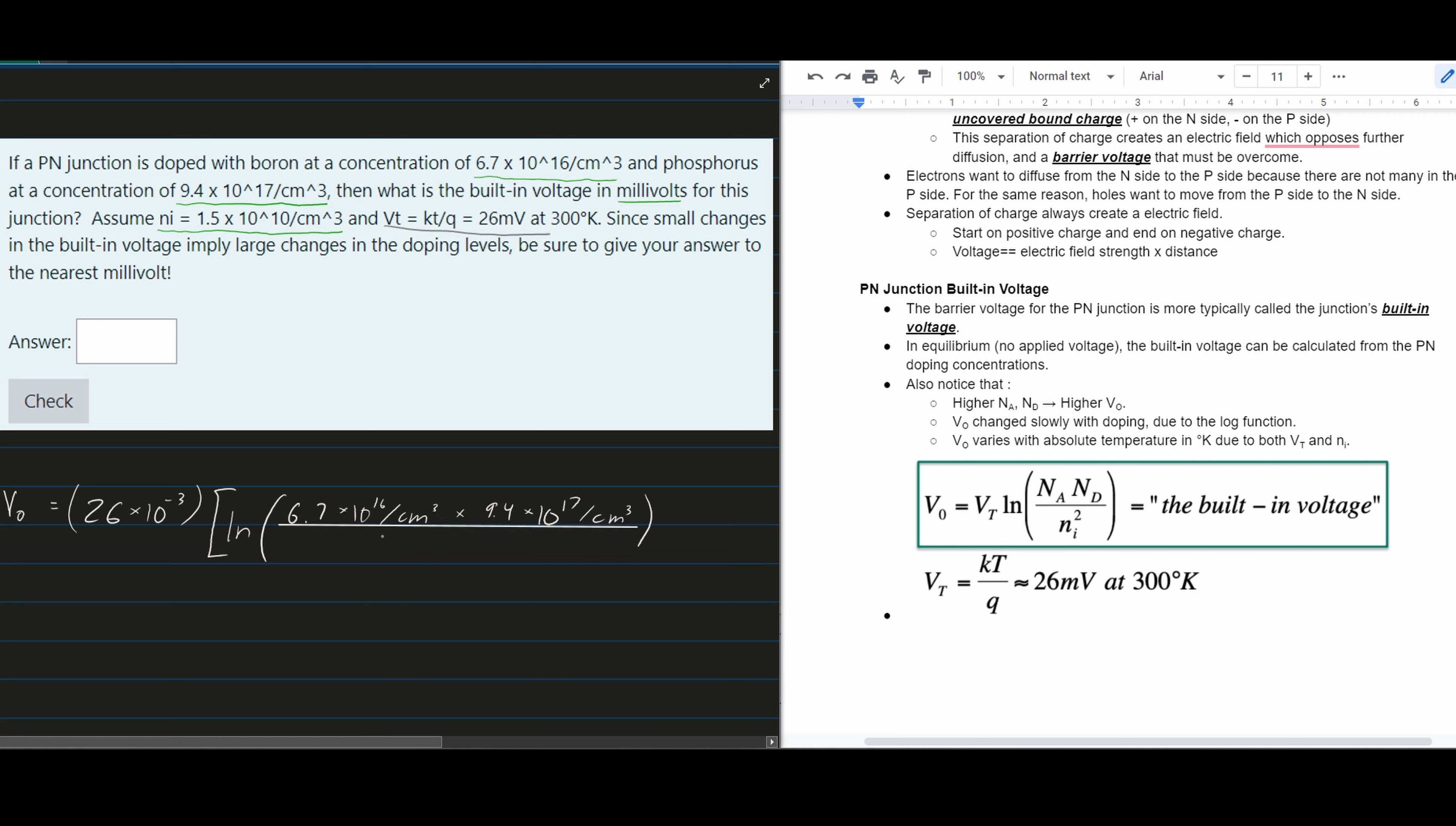Ni is 1.5×10¹⁰ per cm³, and this term is squared in the denominator.